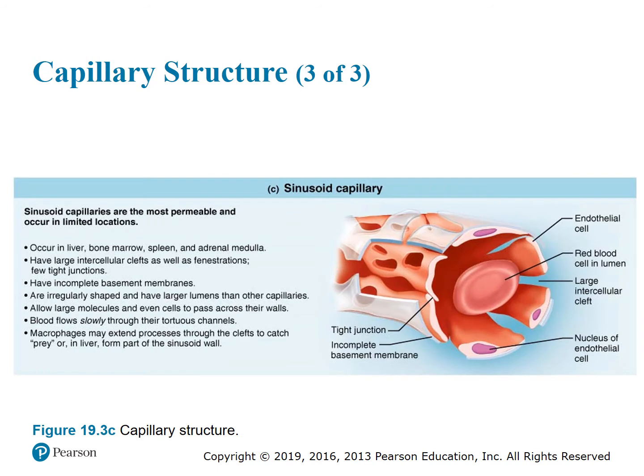Figure 19.3c shows a sinusoidal capillary. They're the most permeable and occur in limited locations such as the liver, bone marrow, spleen, and adrenal medulla. They have large intercellular clefts, fenestrations, few tight junctions, and incomplete, irregularly shaped basement membranes with larger lumens. They allow large molecules and even cells to pass across their walls. Blood flows slowly, and macrophages extend through the clefts — in the liver they form part of the sinusoid wall.